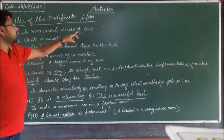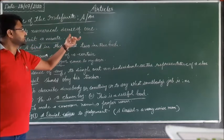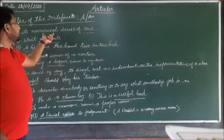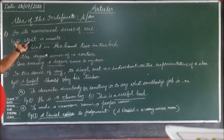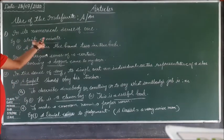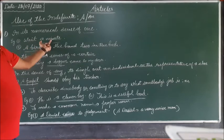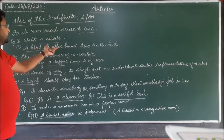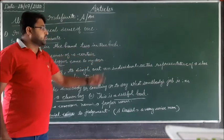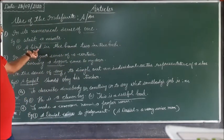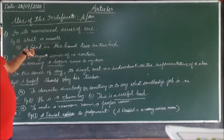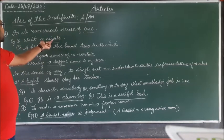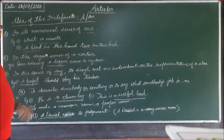The first use is in its numerical sense of 'one'. In the numerical sense, we use 'a' or 'an'. For example, 'wait a minute' — here 'a minute' means one minute. Similarly, 'a word in the hand, two in the nose' — 'a word' means one word. So 'a' or 'an' here represents the number one.